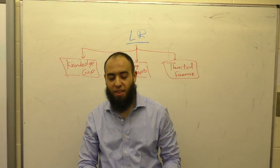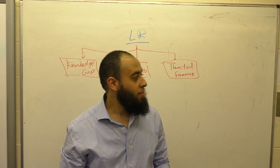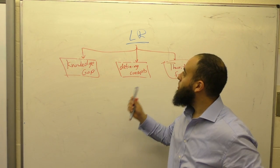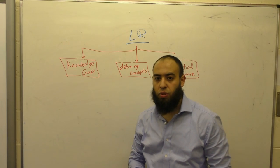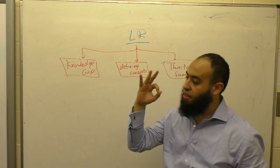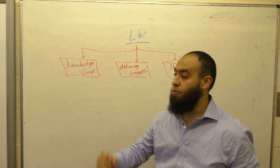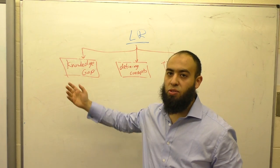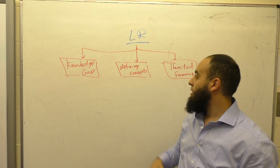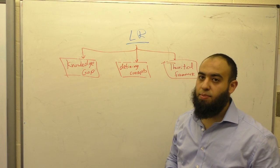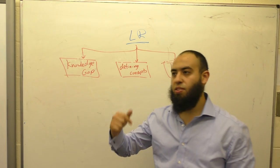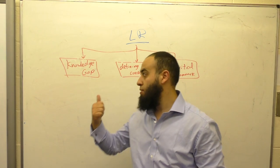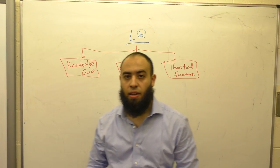Hello, everyone. This is our first lecture on literature review. We talked about why we conduct literature reviews and found three main reasons: first, to find out the knowledge gap and have a reason for conducting your new PhD; second, defining concepts used in your research — research questions, research aims, research objectives, and any new concepts you have discovered.